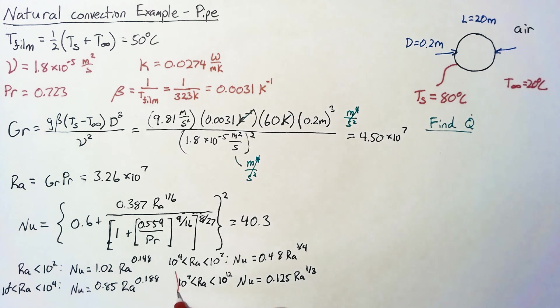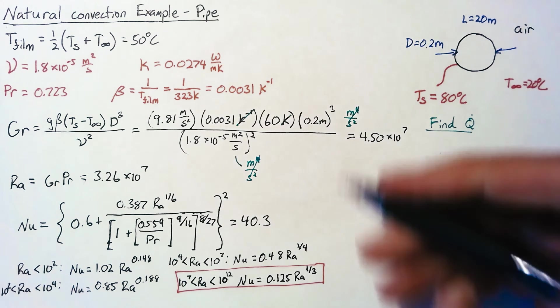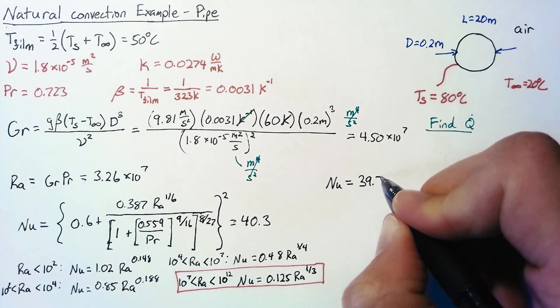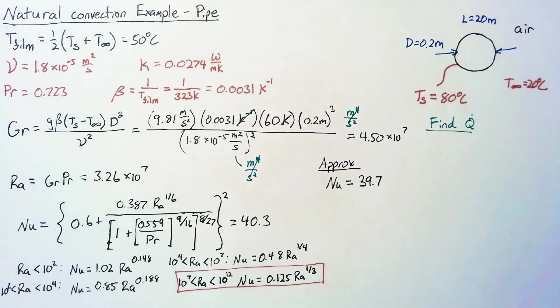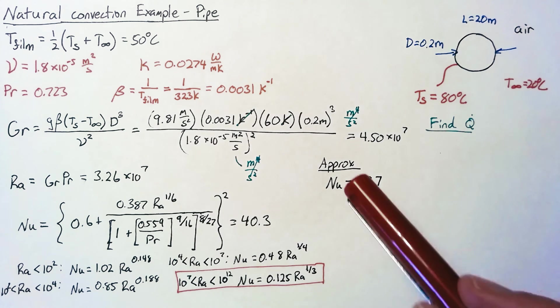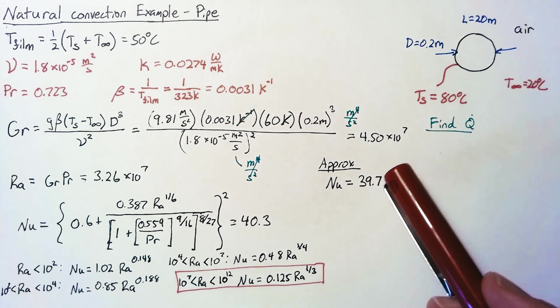So the Nusselt number we want to use is this one at the bottom, which means that our Nusselt number is going to end up being 39.7. So given the choice between using this approximate equation and this much more complicated equation, it's usually easier just to go ahead and use the approximate.